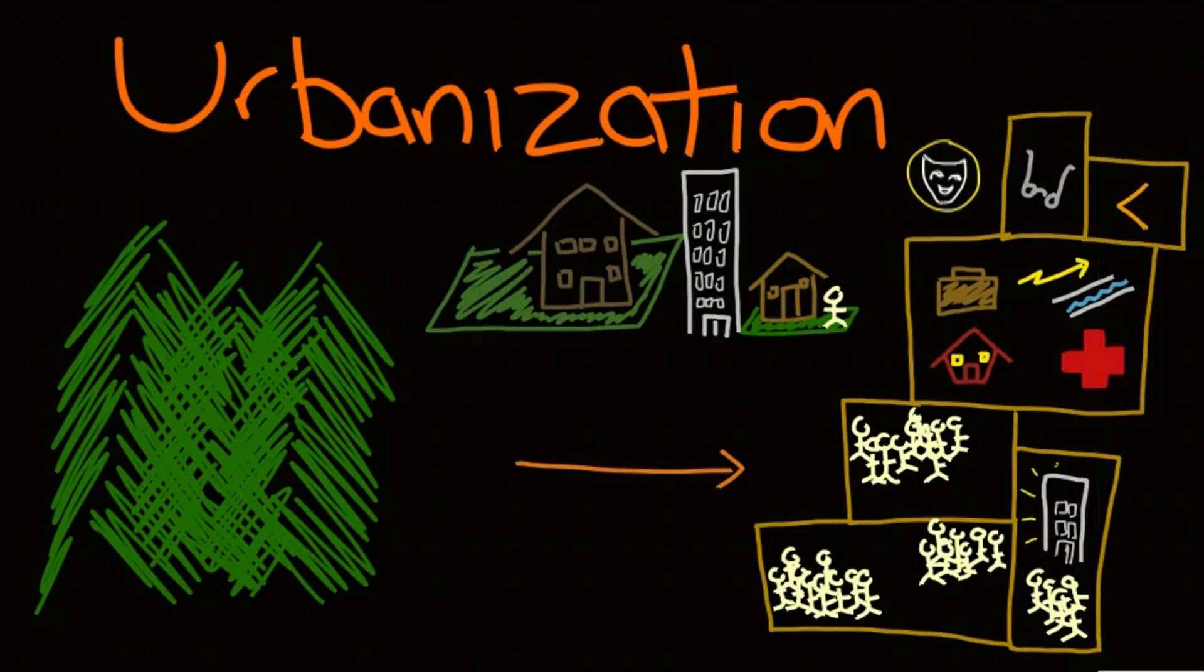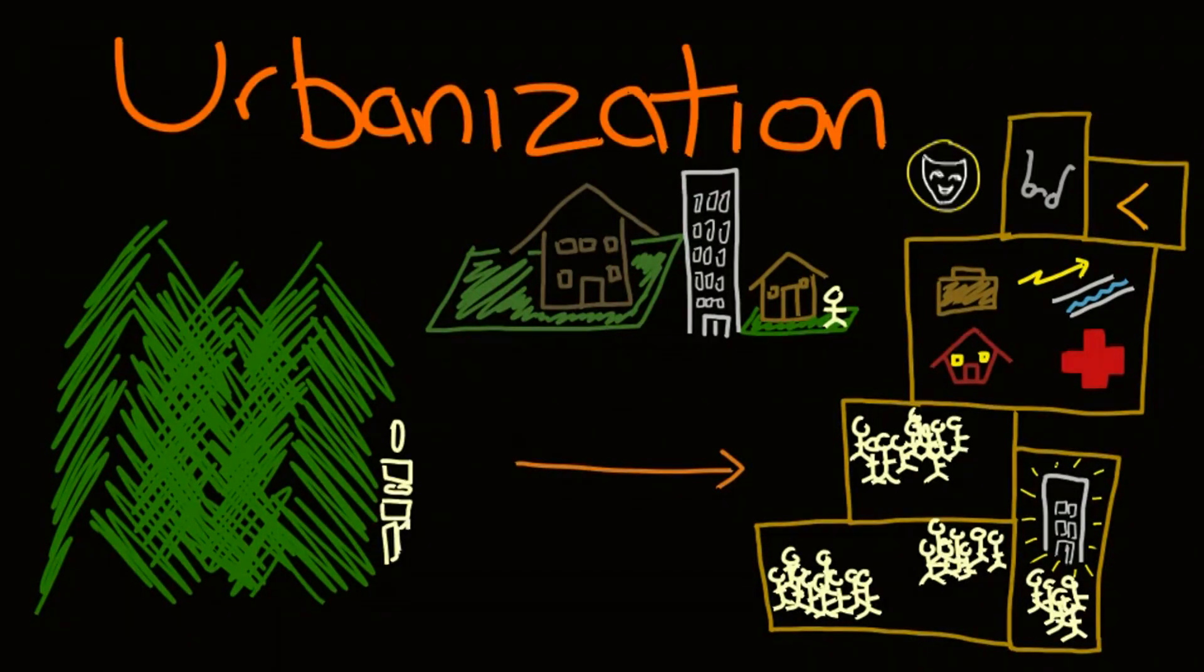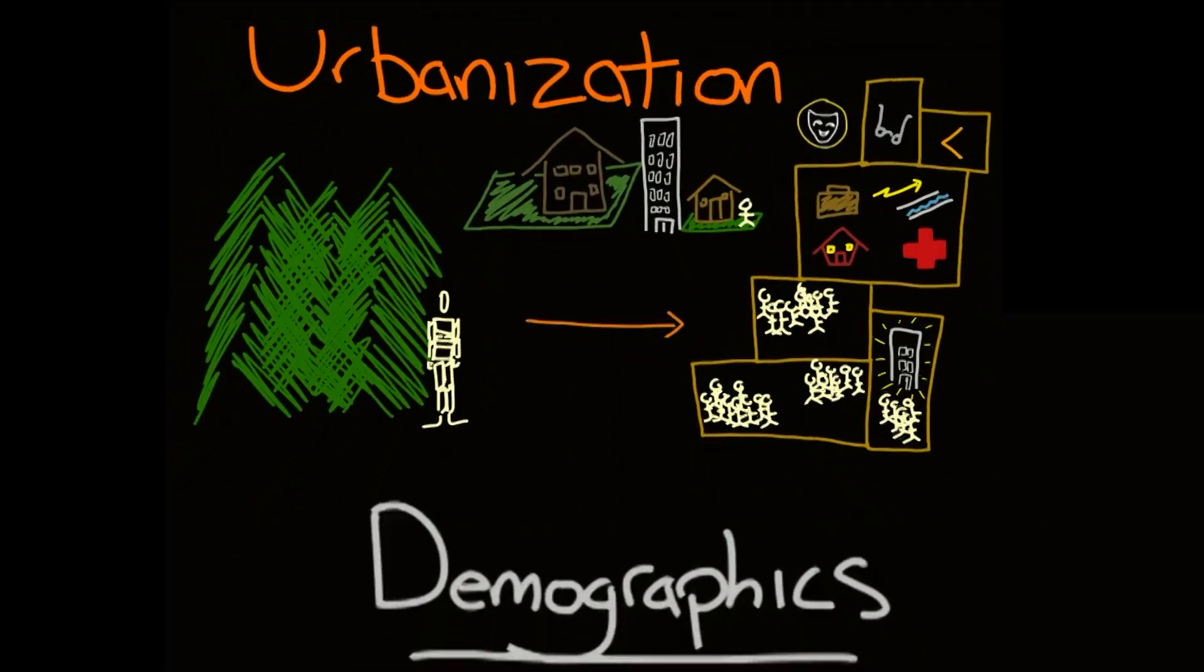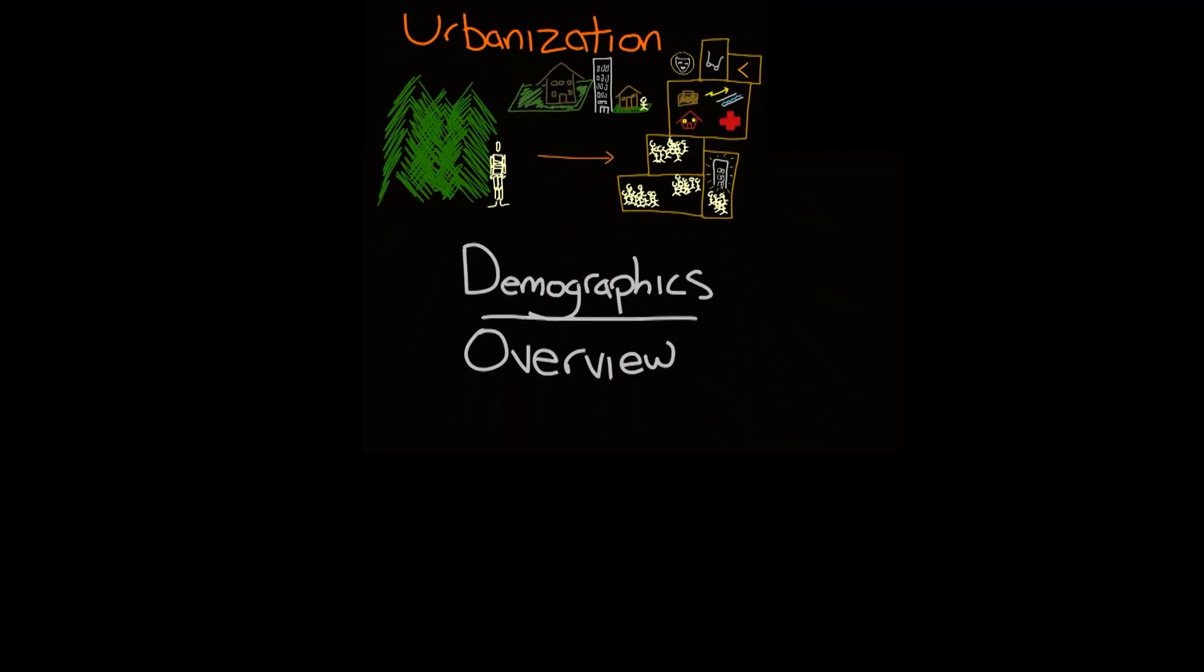Some people rebuild areas of the city itself in what is called urban renewal, which can lead to gentrification, where the former residents are forced out because they can no longer afford the property. Then there's rural rebound, when some people desire to get away from urban areas altogether and choose to move back to rural areas. Alright, so the main gist of urbanization is people moving to the city.